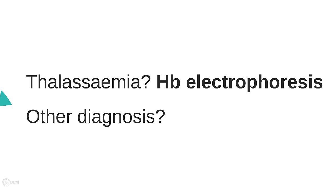In thalassemia major, which is the homozygous disease, patients will present in the first few years of life usually with quite dramatic symptoms. In thalassemia minor, which is the heterozygous disease, the patient may be asymptomatic. Hemoglobin electrophoresis is the first test to diagnose thalassemia. You should also consider anemia of chronic disease, which can cause either a microcytic or — more usually — a normocytic anemia.